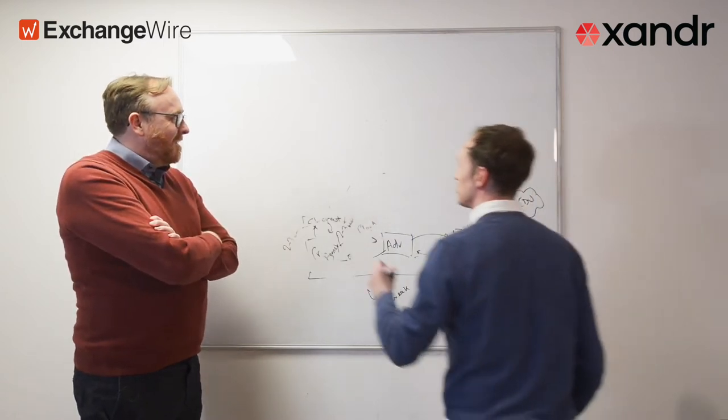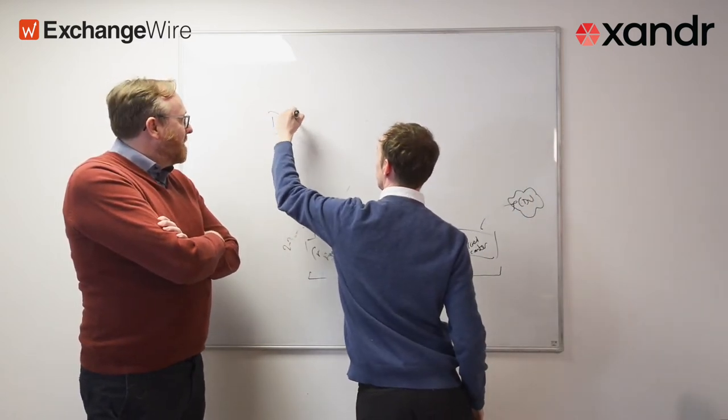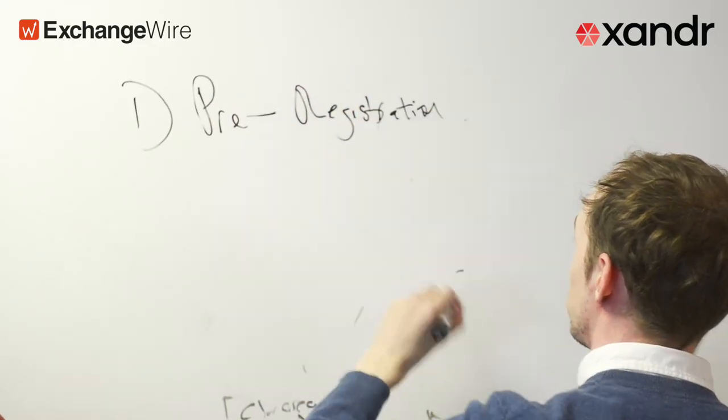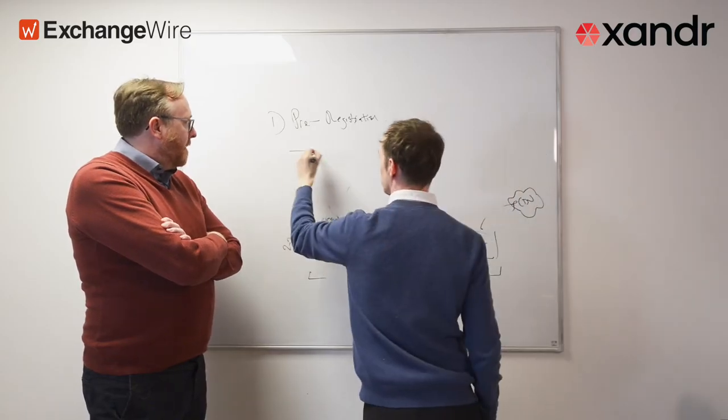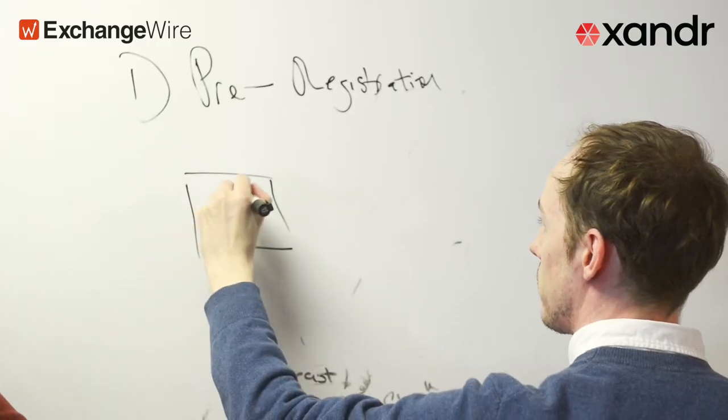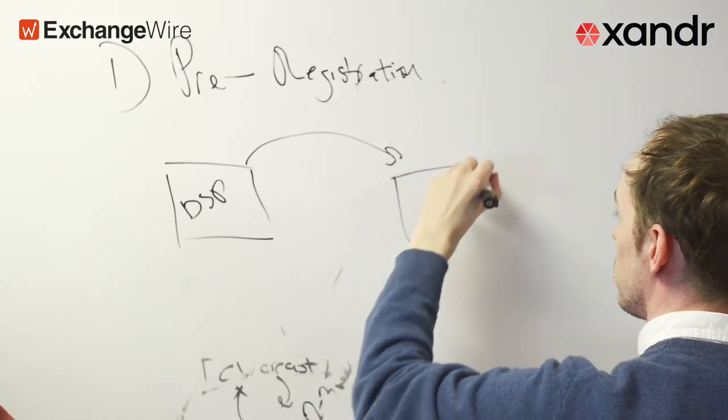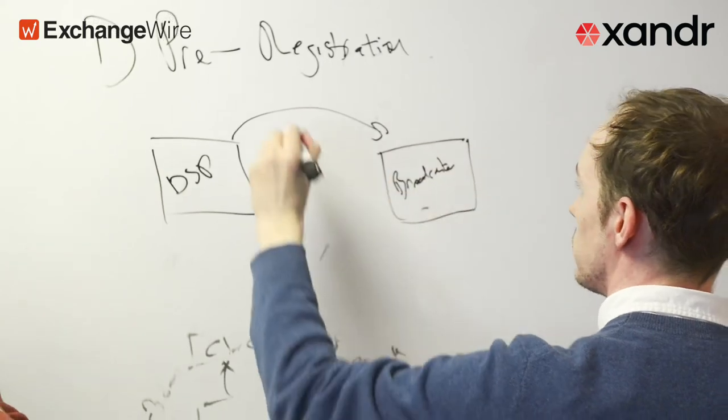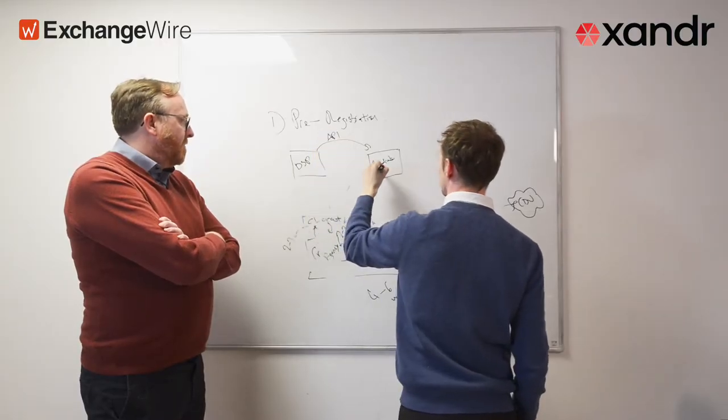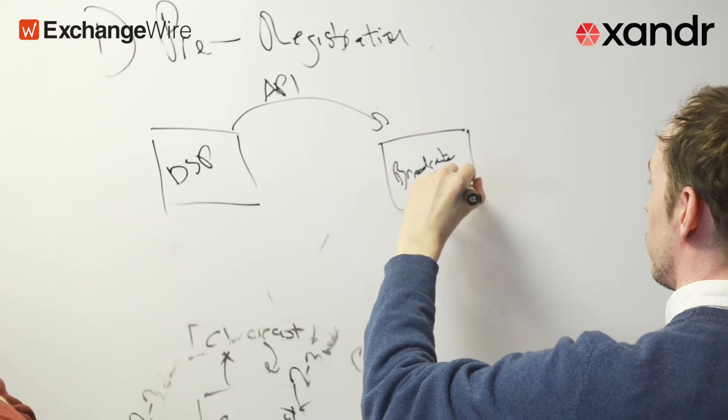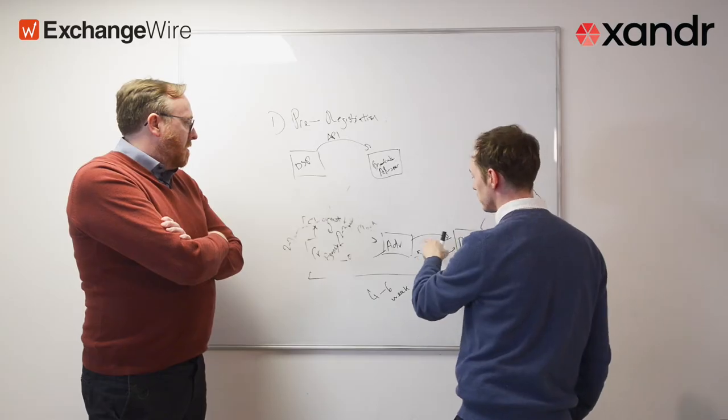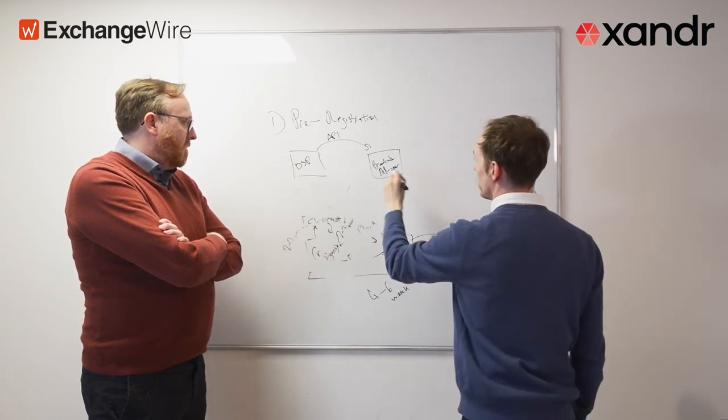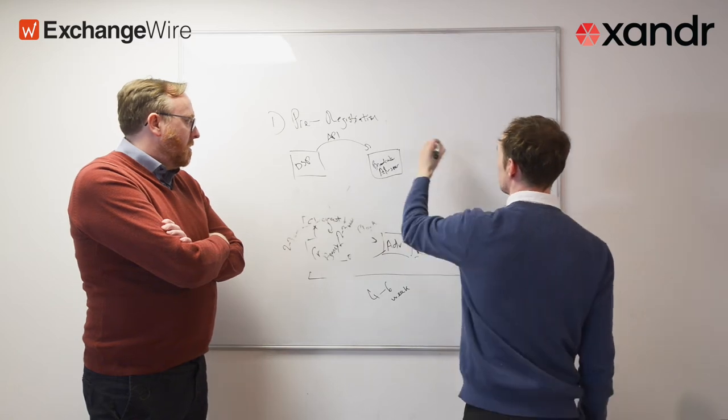The first concept is pre-registration. This happens prior to the campaign. This is a way for a DSP to register the creative with the broadcaster. This will typically be an API call to the broadcaster ad server. We're automating this part of the process where the advertiser has to pass the creative to the broadcaster.